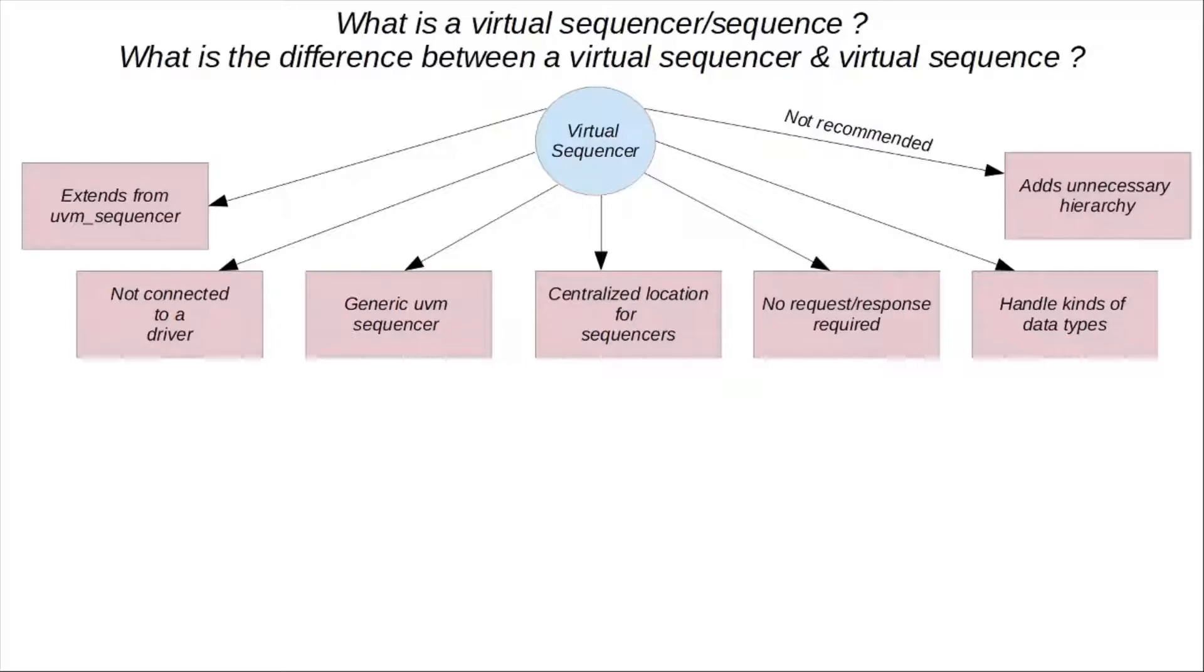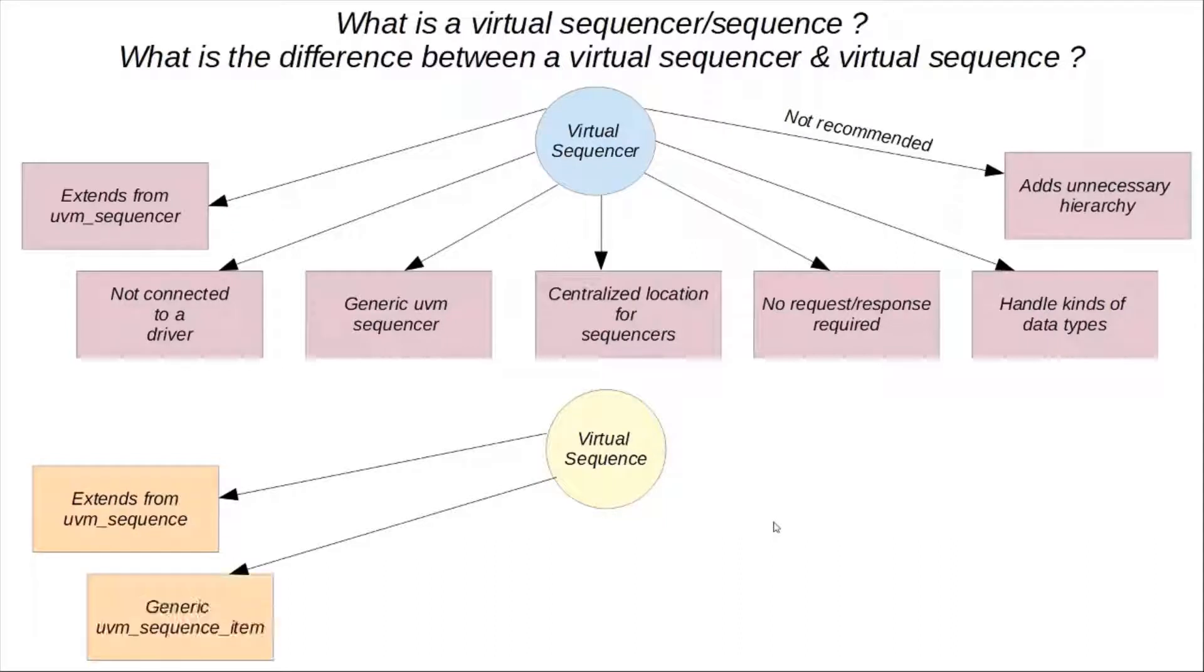So let's now look into what a virtual sequence is. A virtual sequence, on the other hand, is something that extends from a UVM sequence. It's a generic type of UVM sequence item, essentially.